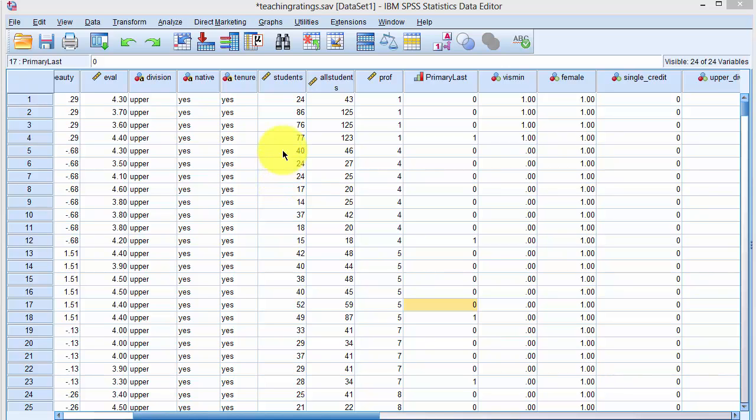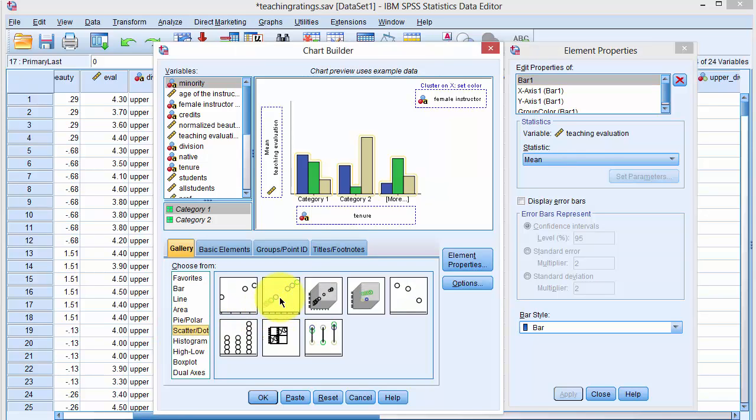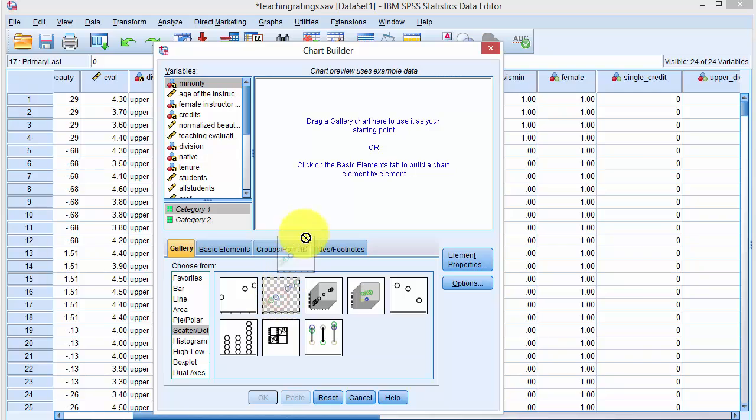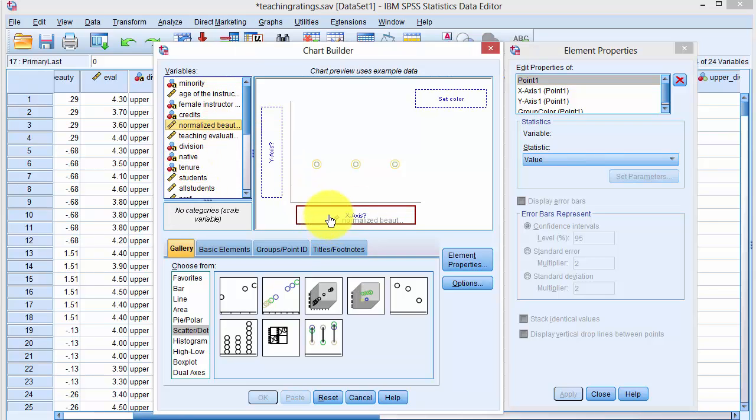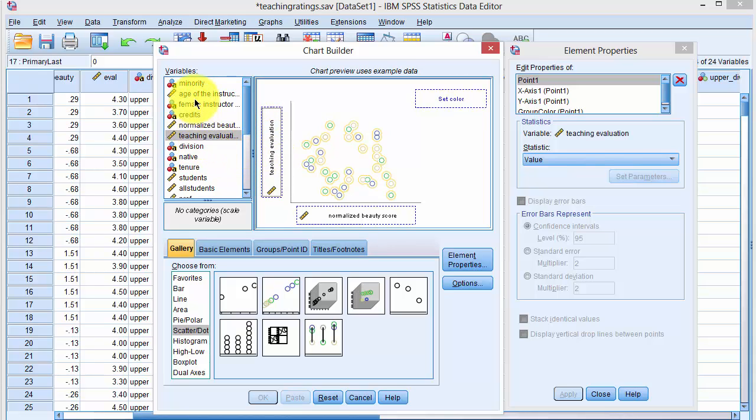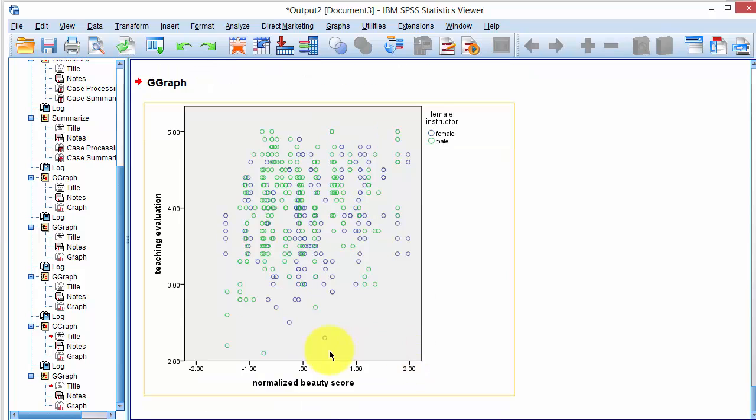To generate a scatter plot, I click on graphs, chart builder, click on scatter, and pick the second. So first, let me reset, and then second template. On x-axis, I'm putting beauty and normalized beauty score on x-axis. I'm dragging the teaching evaluation score on y-axis and the color by gender. So I'm taking the gender variable and dropping it there. Click OK, and this is the same graph that you saw earlier.